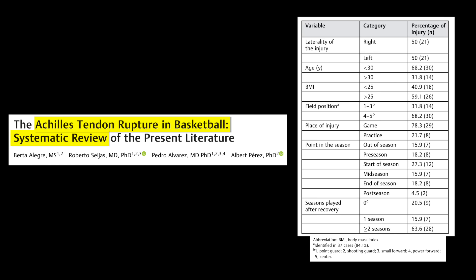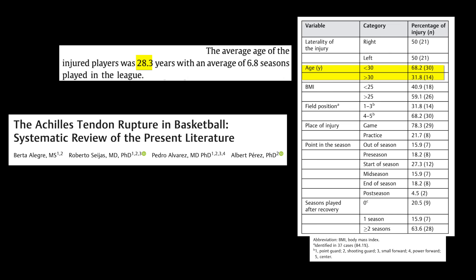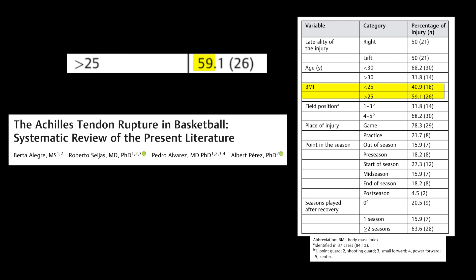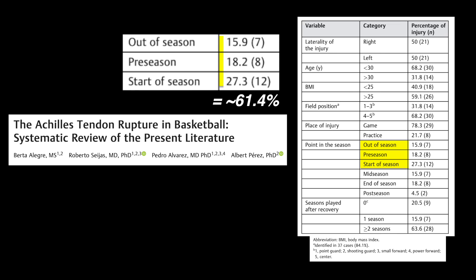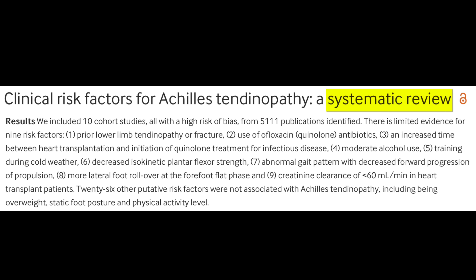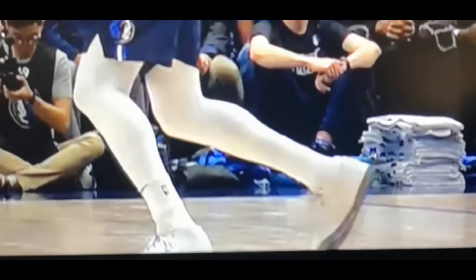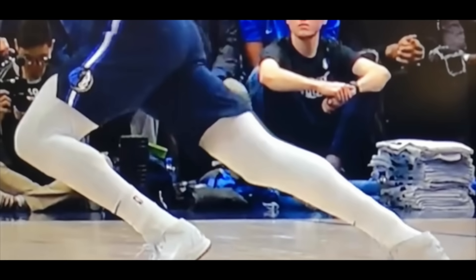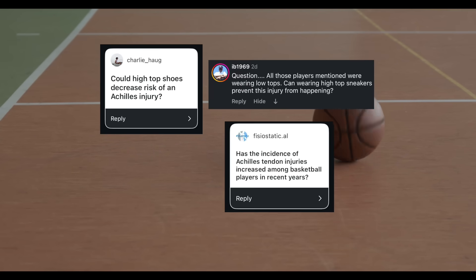One systematic review analyzing Achilles tendon ruptures in the NBA showed the average age of occurrence was around 28.3. About 59% of these injuries occurred in players with a BMI above 25, and 61% tended to occur in the early stages of the basketball year when activity was initially being ramped up. Another systematic review covering over 5,000 publications found at least limited evidence for nine identifiable risk factors, including prior lower limb tendinopathy or fracture, use of fluoroquinolone antibiotics, moderate alcohol use, training during cold weather, decreased isokinetic plantar flexor strength, abnormal gait pattern, and more lateral foot rollover. So if these injuries are occurring almost entirely via one mechanism at a much higher rate in basketball than any other sport, what's causing them and how can they be prevented?